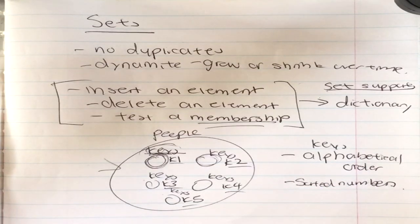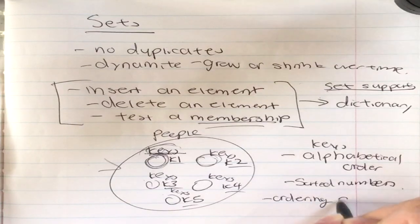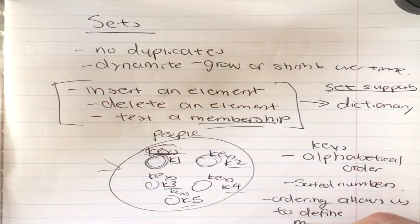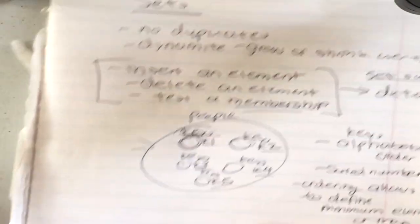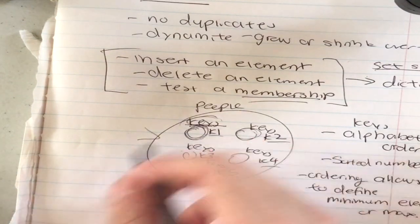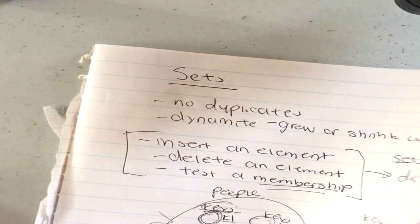Ordering allows us to define the minimum element or the maximum element of a set. If I have a certain ordering of the keys, I can tell which is the minimum and which is the maximum element. Now let's talk about the operations on a set.